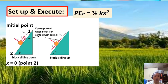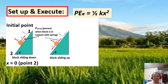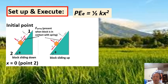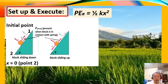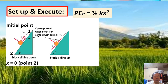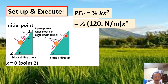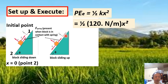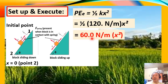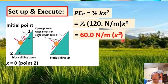We also express the elastic potential energy of the spring when it is compressed. That is equal to one-half times 120 newton per meter multiplied by x squared. When simplified, the elastic potential energy of the spring equals 60.0 newton per meter multiplied by x squared.